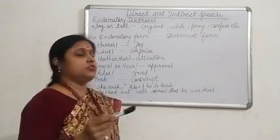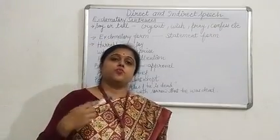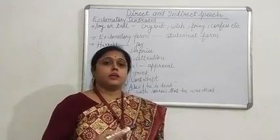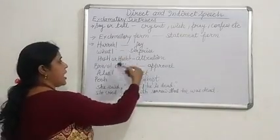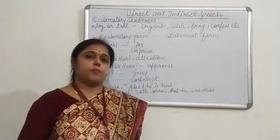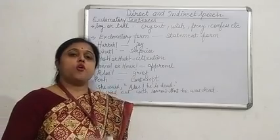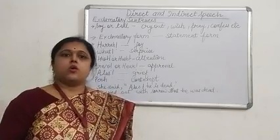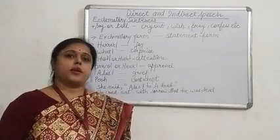The words 'say' or 'tell' change into 'cry out', 'wish', 'pray', 'confess', etc., according to the sudden feeling expressed in the sentence. So you have to first read the sentence and then write down what exactly it is expressing. Rule number two: whenever we change an exclamatory sentence from direct to indirect speech, the form changes from exclamatory to a statement. No exclamation mark should be used in the indirect speech.